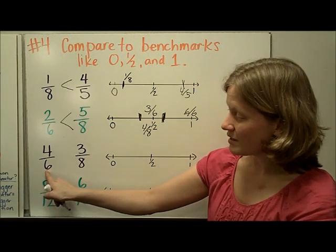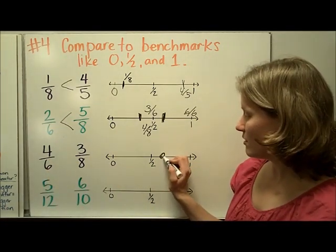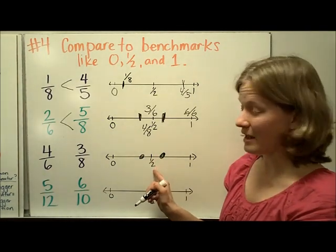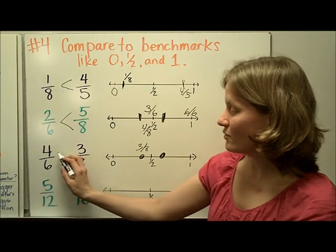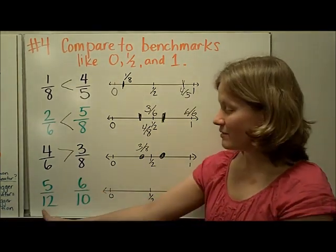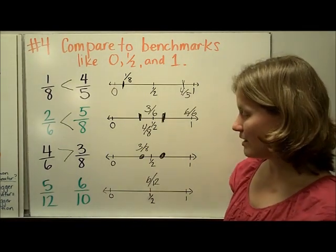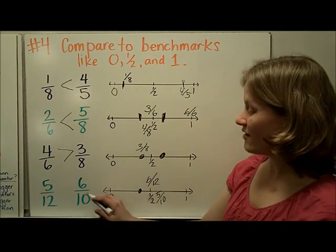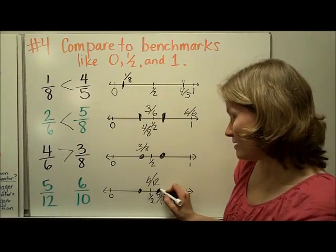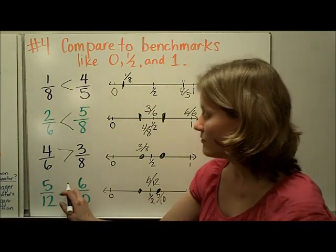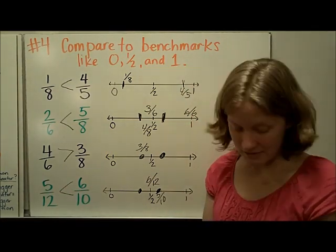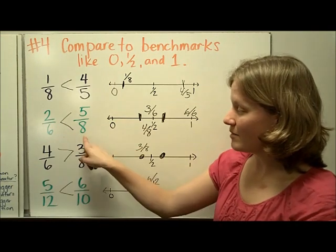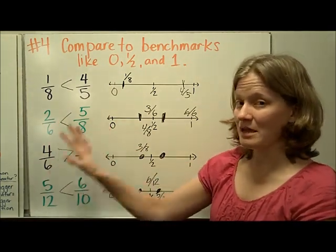For four-sixths versus three-eighths: three-sixths would be one-half, so four-sixths is bigger than one-half. Four-eighths would be one-half, so three-eighths is less than one-half. That means four-sixths is greater than three-eighths. For five-twelfths versus six-tenths: six-twelfths would be one-half, and five-twelfths is a little bit less than that. Five-tenths would be one-half, and six-tenths is a little bit more. So six-tenths is greater than one-half, and we read five-twelfths is less than six-tenths. In each of these examples, we renamed one-half to match the denominators and found out if the fraction falls less than or greater than one-half.